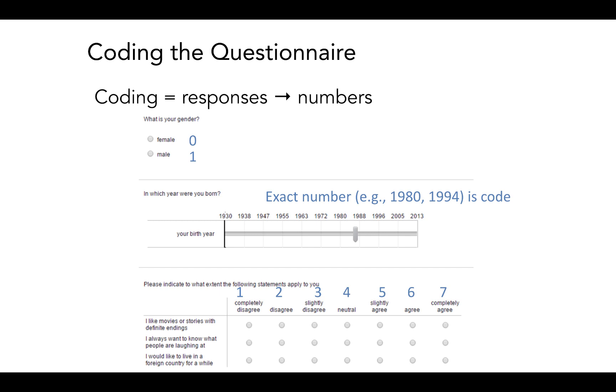The second question is in which year were you born? And let's say in this example, it was asked by means of a slider scale where respondents can slide to whichever year of birth applies to them. So the exact number, their year of birth, whatever their year of birth is, is the code in and of itself. That's because the year of birth is numerical already. It's like, how old are you? And you say 25. Well, that already is a code in and of itself because it is numerical. So this is very easy. The code is already there.